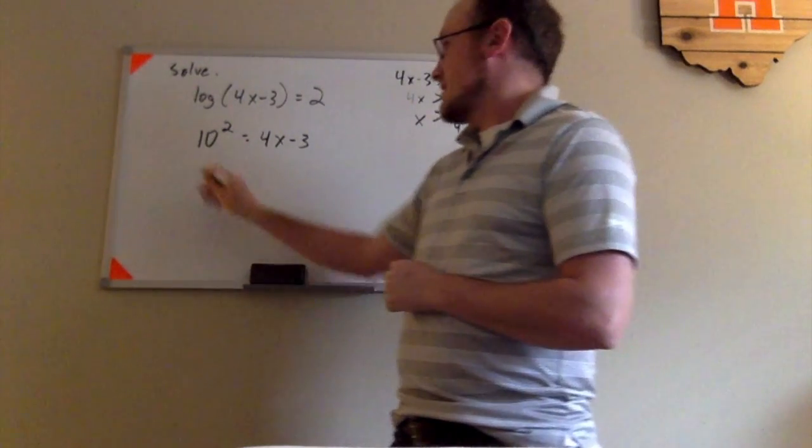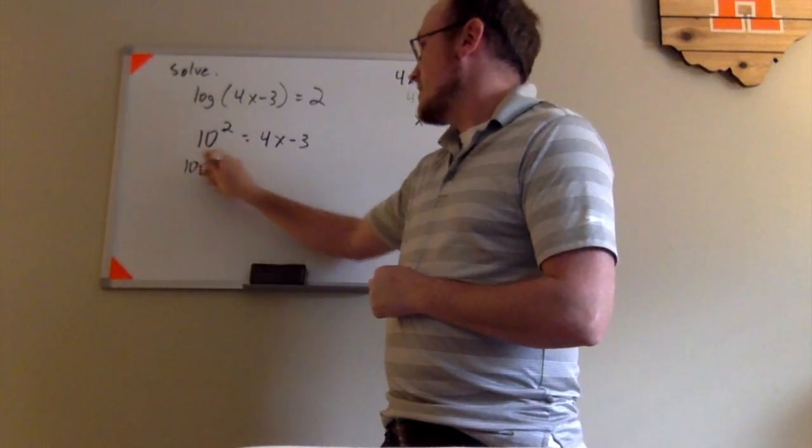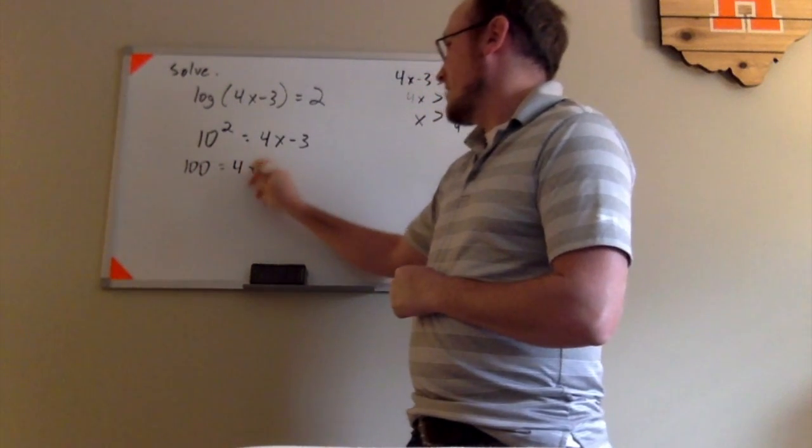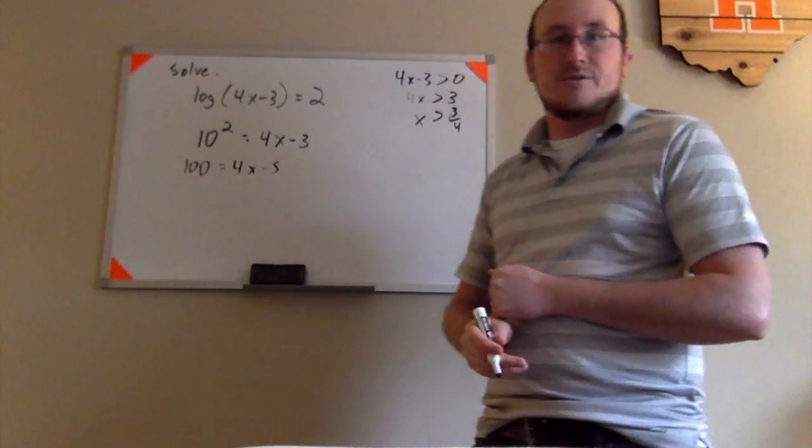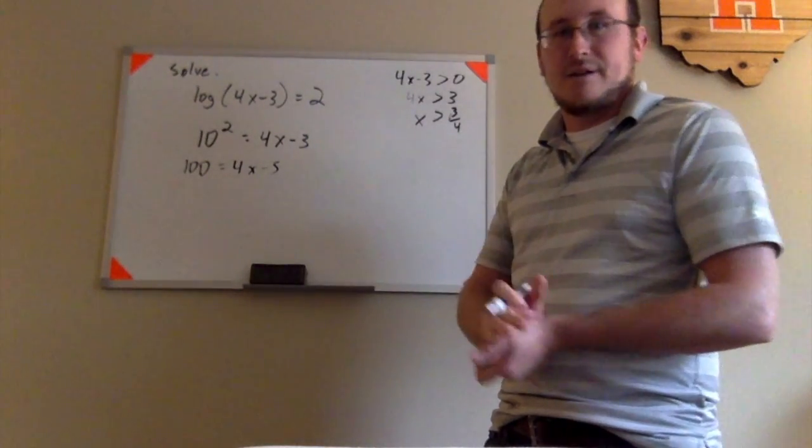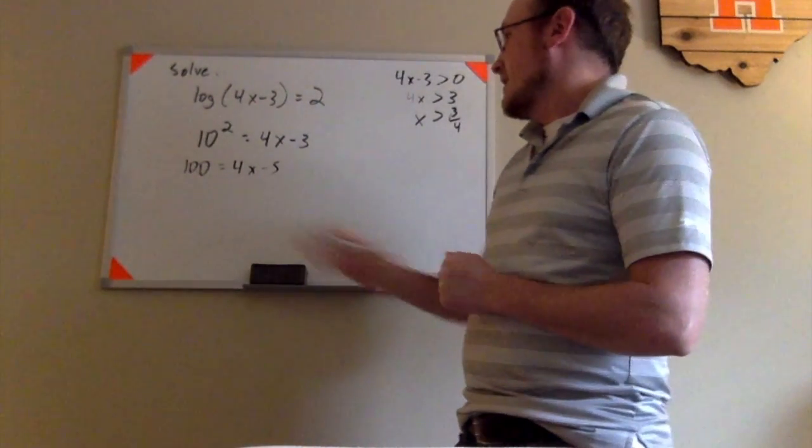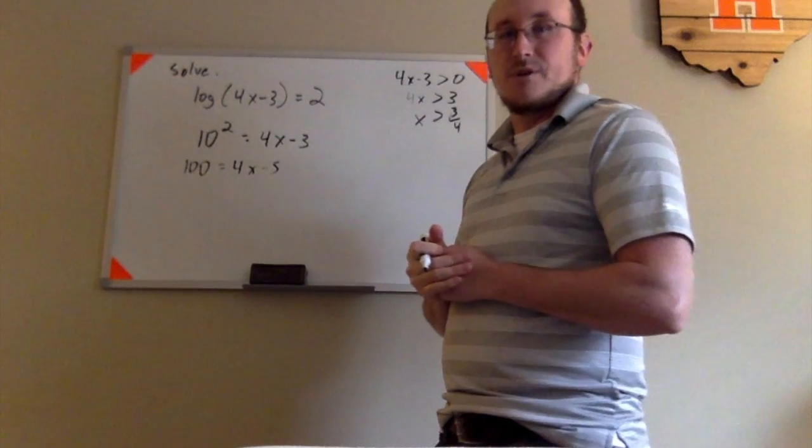Now going ahead and simplifying this, 10 squared is 100. Please don't make a common mistake of saying that 10 squared is 20. No, you don't multiply by 2. 10 squared means 10 times 10. I see students do that all the time. And now I have two remaining steps of algebra to solve this for x.